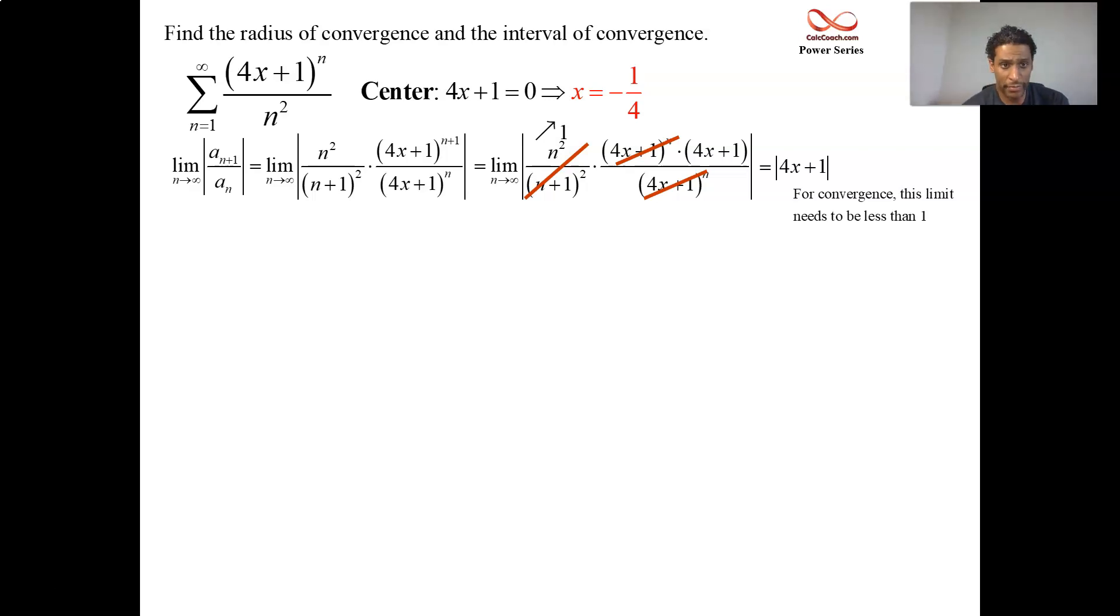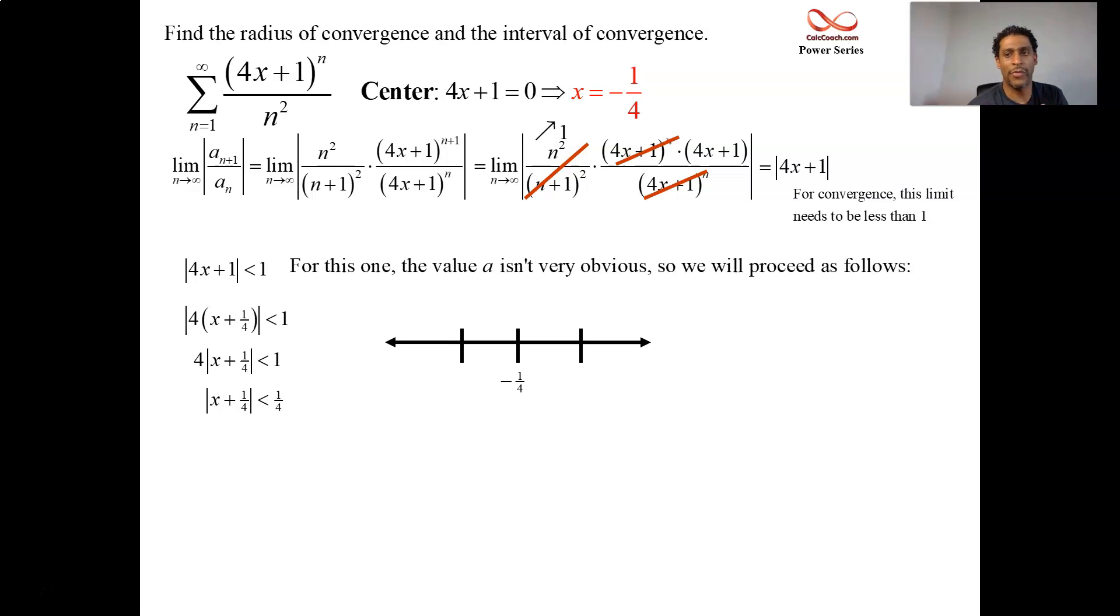And we need for that to be less than 1 for convergence. Now we have to solve this inequality. And it's an absolute value inequality. You can't just look at this and say, oh yeah, for sure it has to be this. So we're able to get the fact that a is negative 1 fourth. And now we're going to solve this by factoring out the 4, dividing by it, and then we'll have the absolute value of x plus 1 fourth less than 1 fourth. Basically, what this means to you is that you go from negative 1 fourth, you get to add and subtract the fourth. Let's look at a number line. Negative 1 fourth is your center. And then we add 1 fourth to get to zero. We take away 1 fourth to get to negative 1 half.